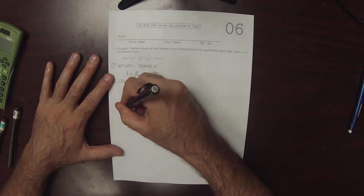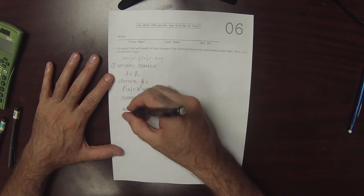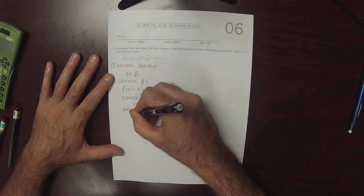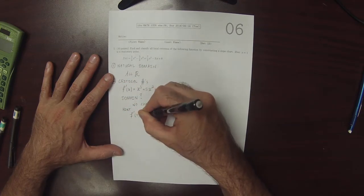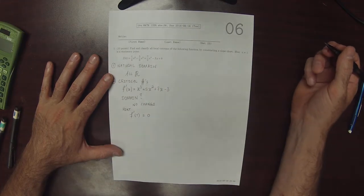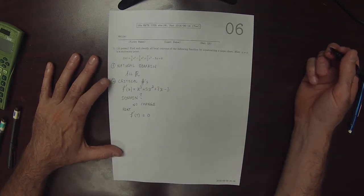So what the hint is saying, it's saying that if you plug in 1 to the derivative, you should get 0 because it's a stationary point.